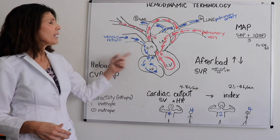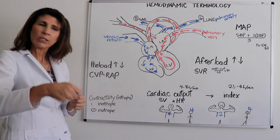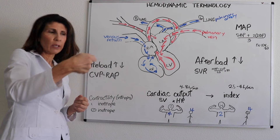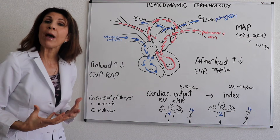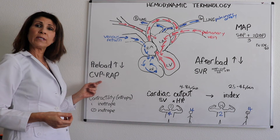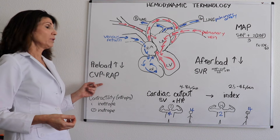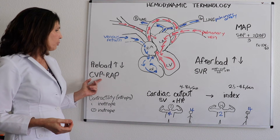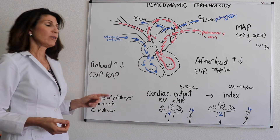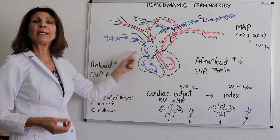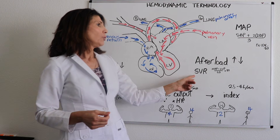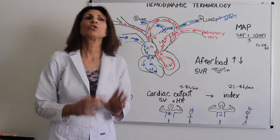How do we measure preload? We can't measure volumes directly — we can't go in there with a little measuring cup. So what we do is extrapolate volume by measuring pressure, and we do that with what's called the central venous pressure monitoring device. The central venous pressure (CVP) and right atrial pressure (RAP) are the same thing — CVP and RAP are interchangeable.